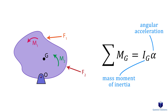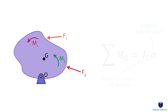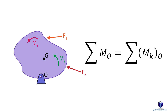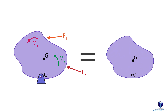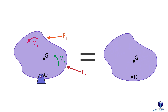If instead we want to find the moment about a random point such as point O, the equation can be written accordingly, but the easiest way to understand it is using a kinetic diagram. In a kinetic diagram, we draw mass times acceleration vectors at the center of mass — showing the mass times acceleration due to all external forces. We also show the moment about the center of mass, which is the mass moment of inertia multiplied by the angular acceleration. Think of it as a visual representation of F equals ma.